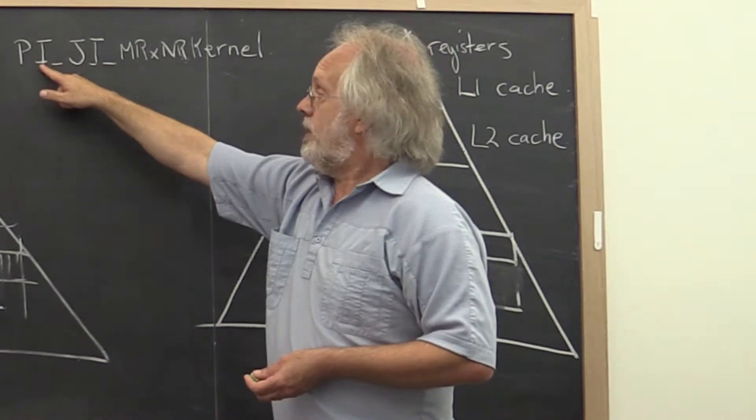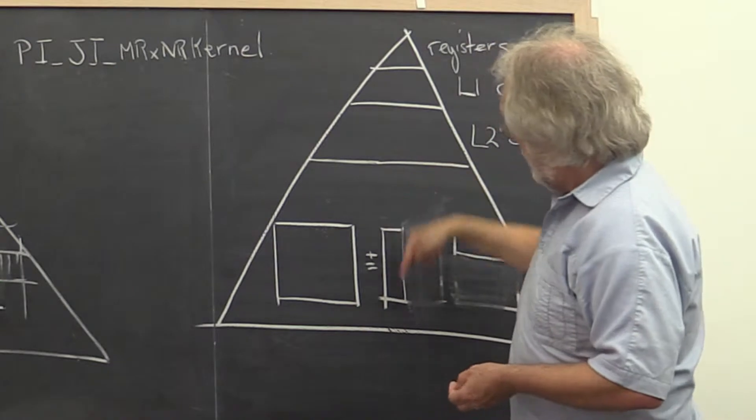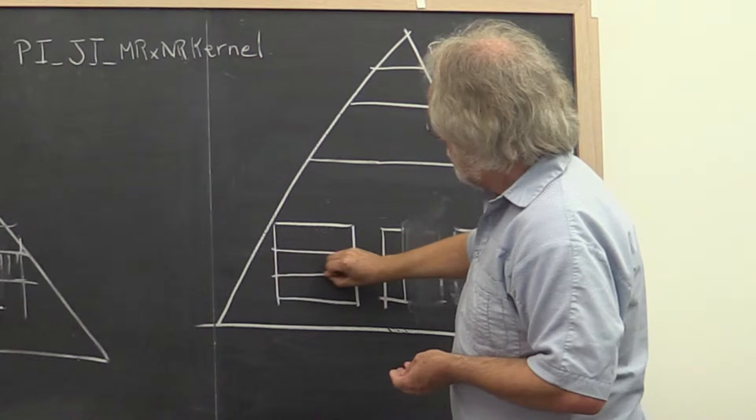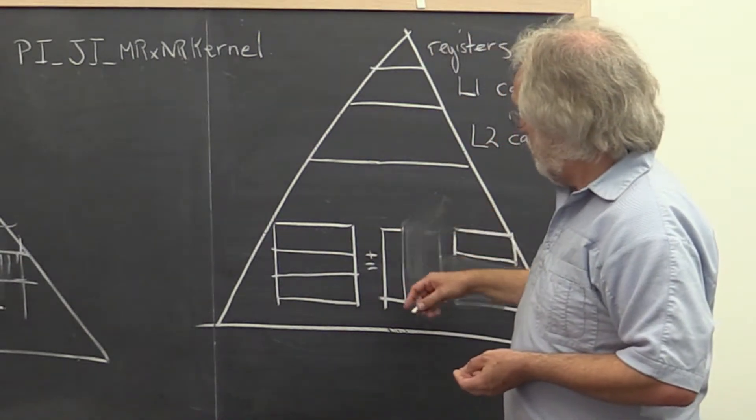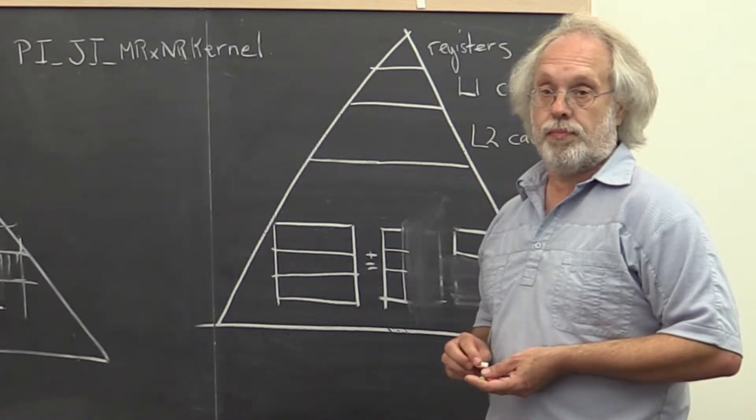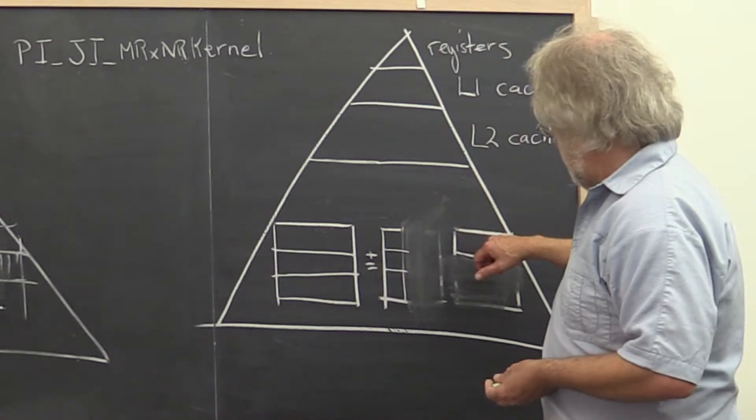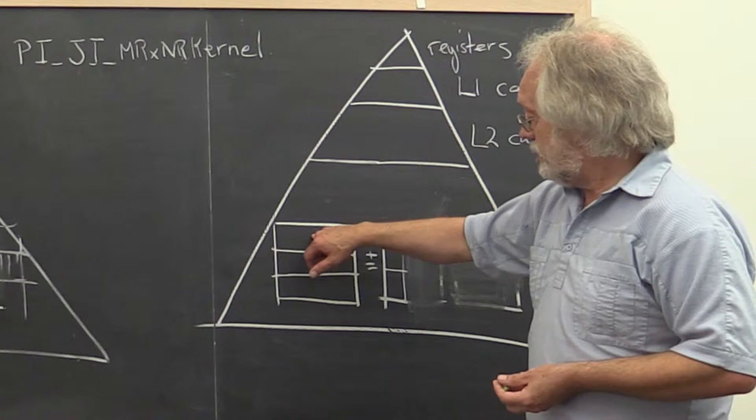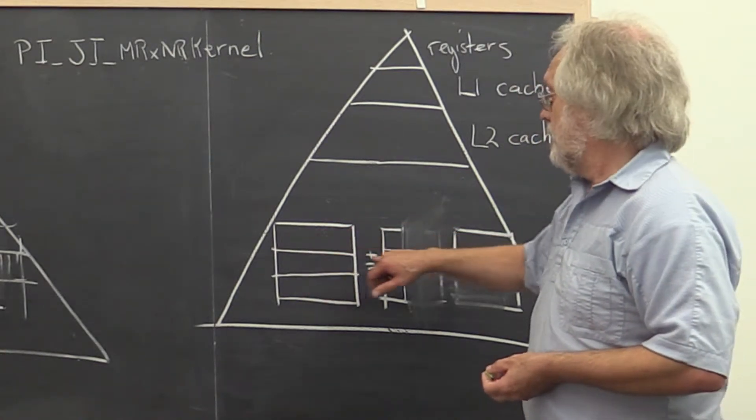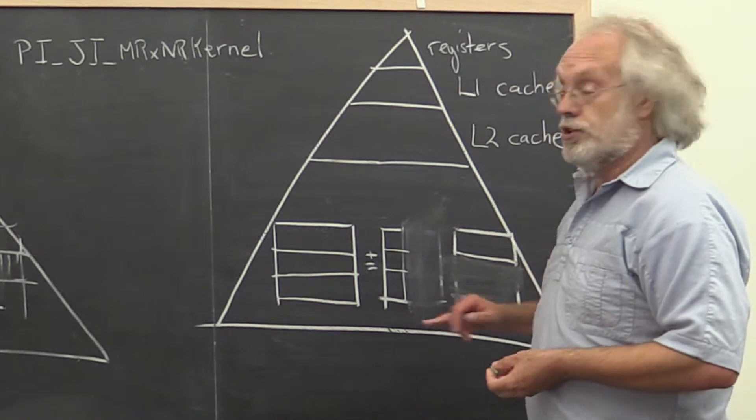We then have a loop indexed by I. I means that we're partitioning C and A. So now what we do is take C and partition it into row panels, and take our column panel of A and partition it into blocks. What we now need to do is a block of A times the row panel of B to update the row panel of C. And then we move on to the next row panel of C, which is the next block of A times the same row panel of B and so forth.